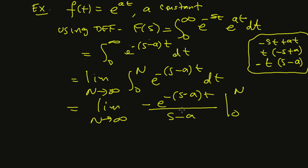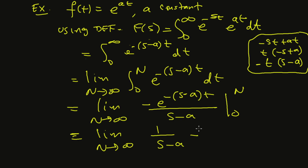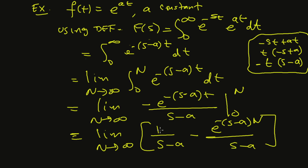Switching to the improper limit form and finding the antiderivative — dividing by the exponent and rearranging the negative — for zero we get one over s minus a, and for n we substitute t equals n.